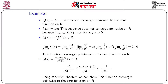The last example is fn(x) = sin(nx + 3)/√(n + x) for all x in ℝ. We observe that sin(nx + 3)/√(n+1) is bounded between -1/√(n+1) and 1/√(n+1) using the property of the sine function. By the sandwich theorem, since both bounds tend to zero as n tends to infinity, the limit of fn(x) goes to zero. So using the sandwich theorem we conclude that this function converges pointwise to the zero function on ℝ.